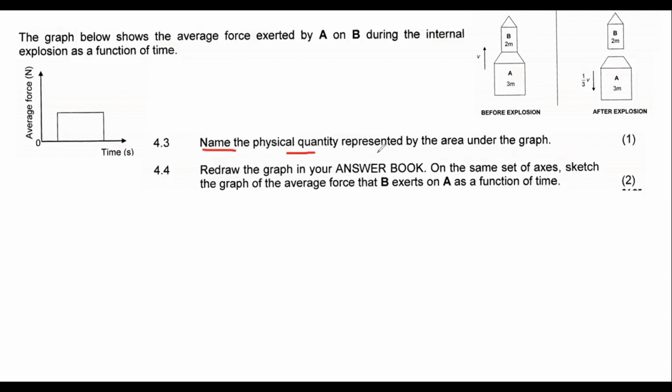It says name the physical quantity represented by the area. Now you can't just look at this and be like, oh, easy force and time. What is that? Let me rather show you the proper way to do it. We know that if you have a rectangle and if this is b and this is c, how do we calculate the area? Well, we know that area is equal to b times c. So if you want to calculate the area of this shape, it would be whatever the y axis is multiplied by whatever you have on the x axis. So that's going to be whatever the y axis is. So the area is going to be average force. So I'm just going to say force multiplied by the x axis, which is time.